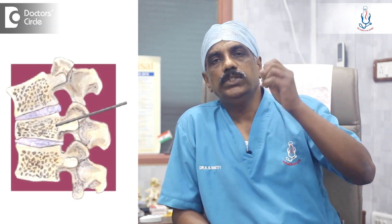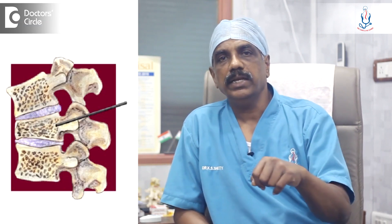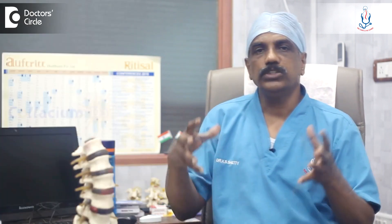In vertebroplasty, what we do is for a fracture vertebra, we just put a needle inside, and through the needle we put some cement. That cement goes amidst the fracture fragments and it solidifies, so the whole vertebra which is broken into many pieces becomes one solid block. That is vertebroplasty.